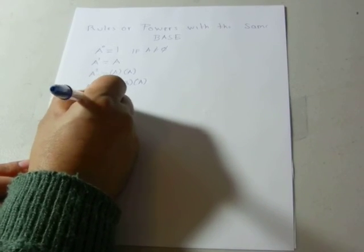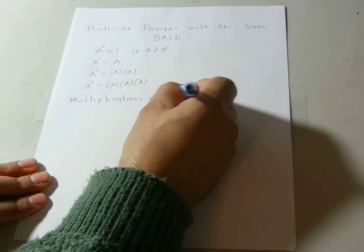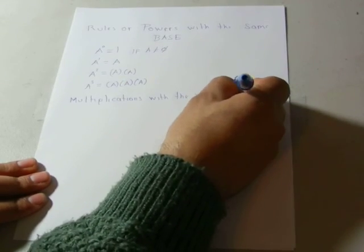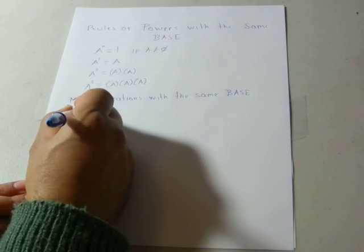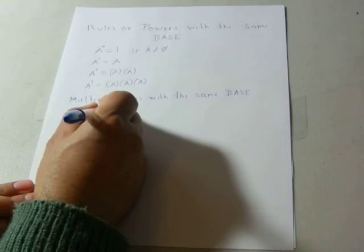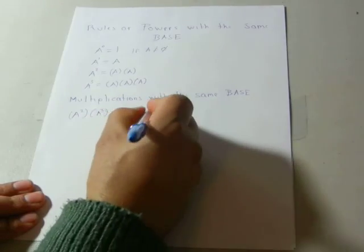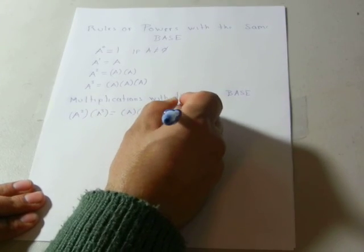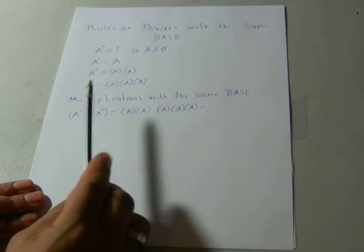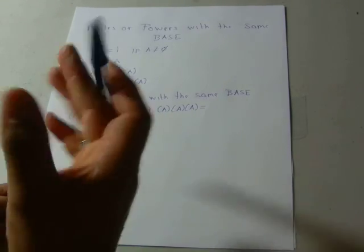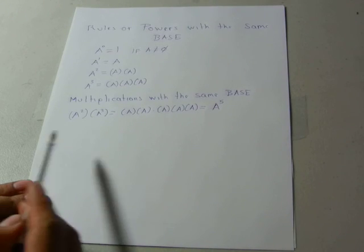Now let's look at operations — first, multiplications with the same base. Let's use our previous examples: a to the second power times a to the third power. Expanding, this is a times a, then times a times a times a. You can count one, two, three, four, five — that is a to the fifth. Let's figure out the shortcut.